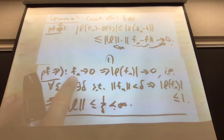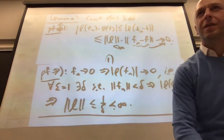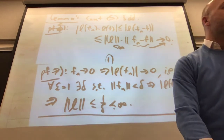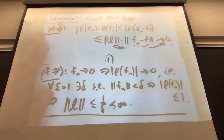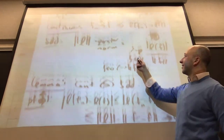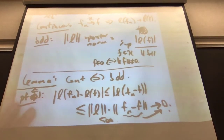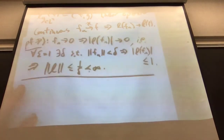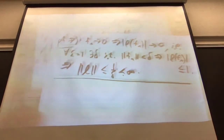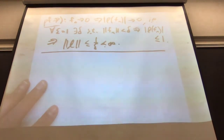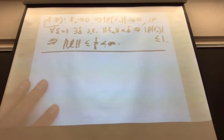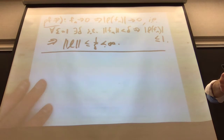Any sequence which goes to zero... you can't take it to be the zero sequence, because in the definition of operator norm you don't want to divide by zero. You want a sequence that goes to zero without touching zero. You can take the same function, which isn't zero, and multiply it by complex constants that are getting smaller, for example.